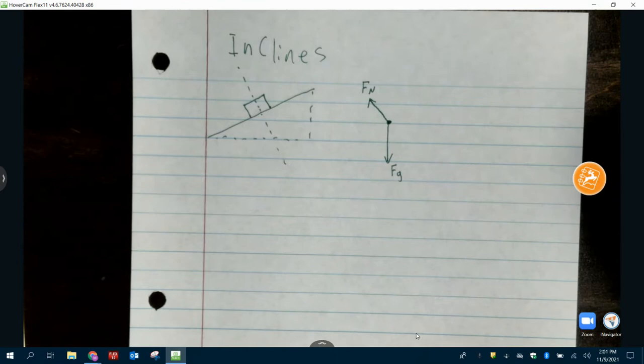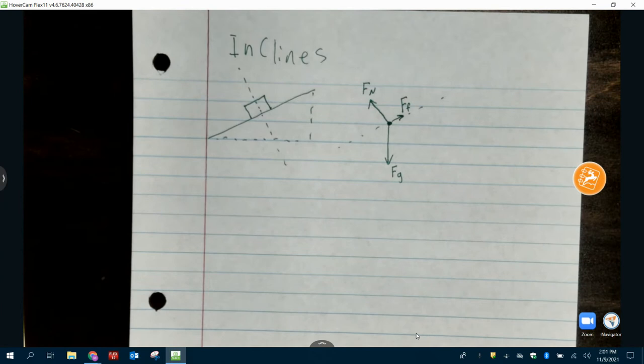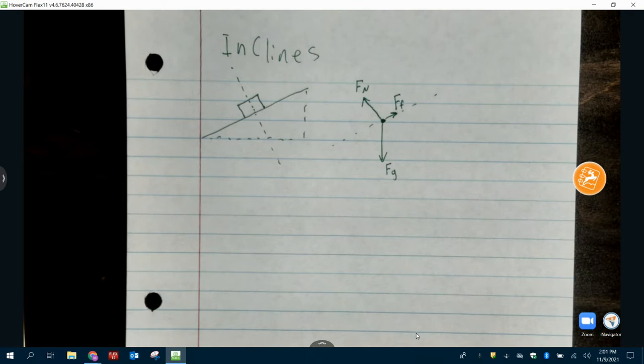If there's friction, which way does it go? It's going to go opposite. So if it wants to go down the ramp, there'd be some friction going up. There may or may not be friction in this example. I'm just going to go ahead and list it there. That's what our free body diagram looks like.